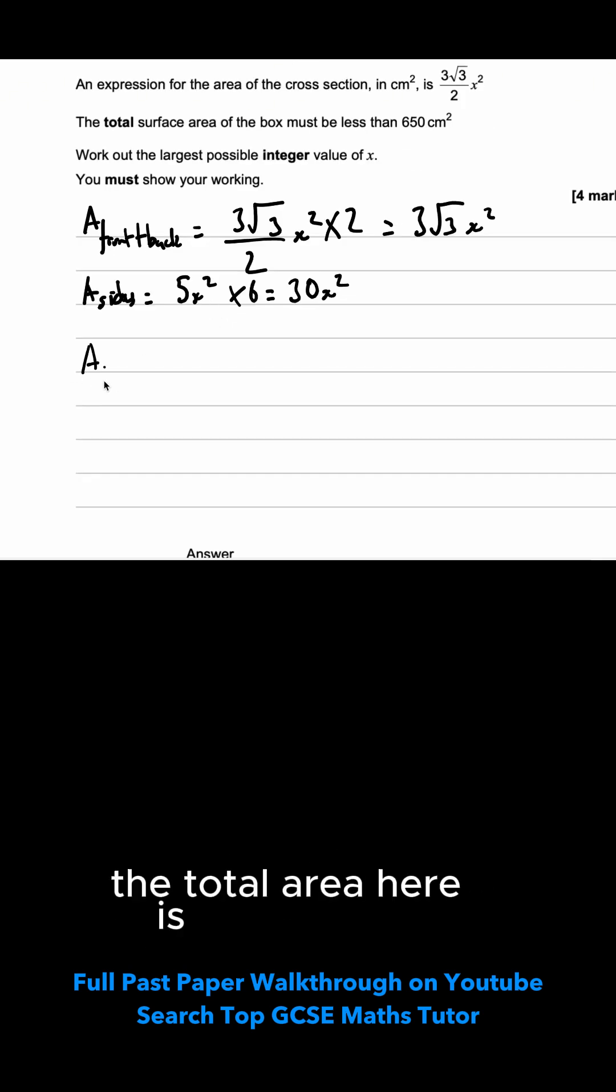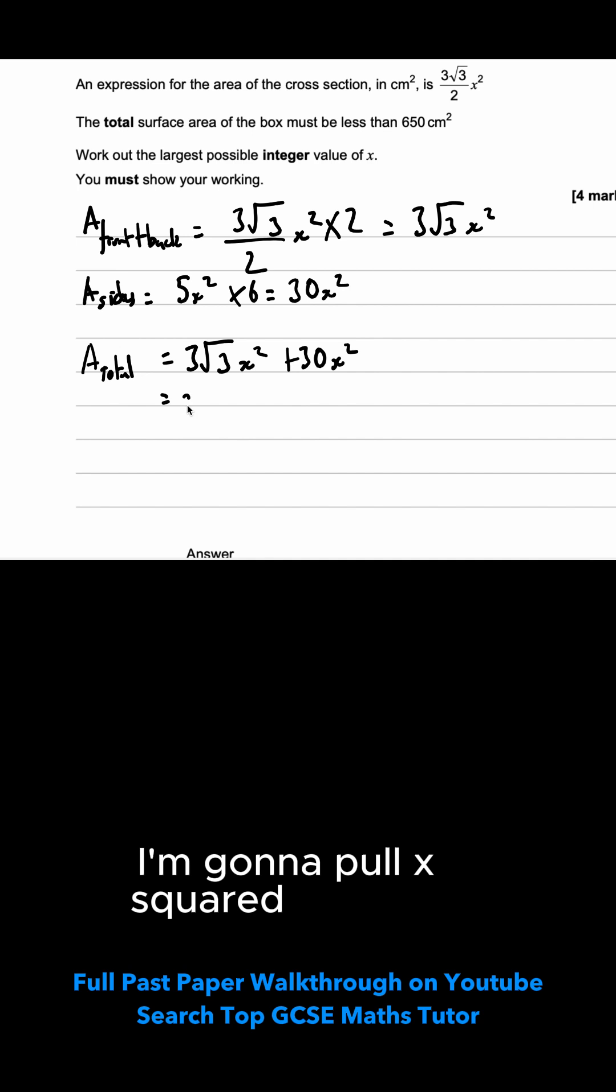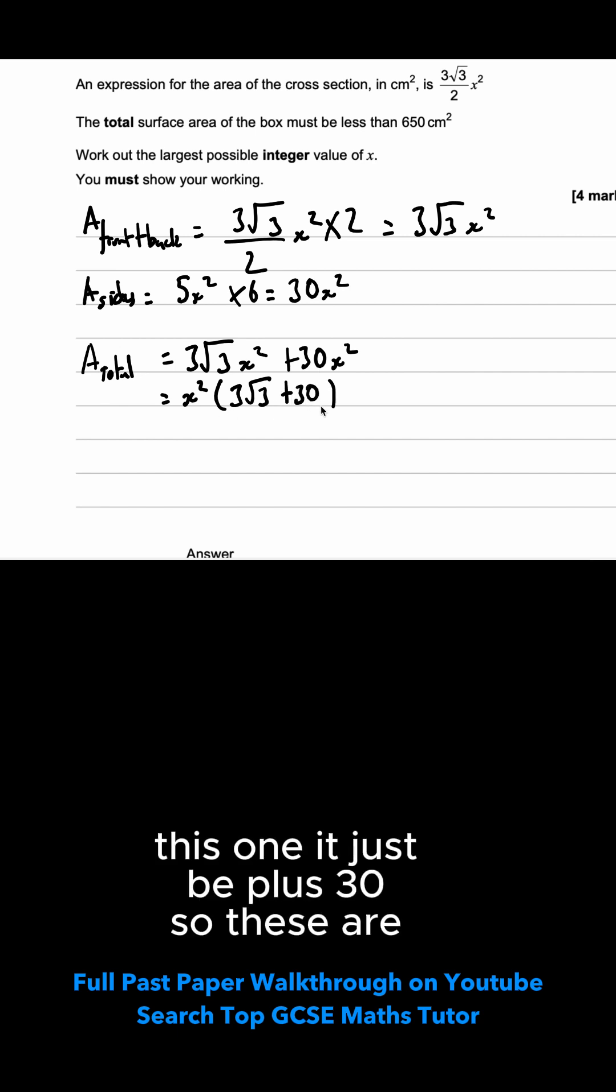The total area here is going to be both of these added up together. So it's 3 root 3x squared plus 30x squared. Just to help with the next bit, because I can see both of them have x squared in, I'm going to pull x squared out and factorize it. So what multiplies by x squared to give me this? It'd just be 3 root 3. For this one, it'd just be plus 30. So these are both numbers. We can add them together, but I'll just leave it like this for now.